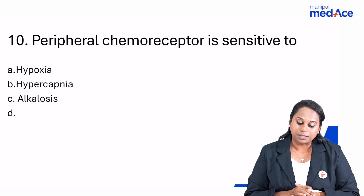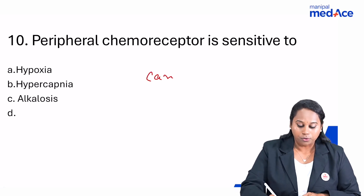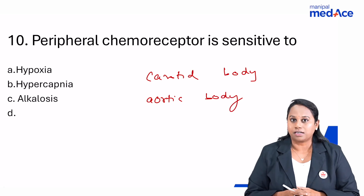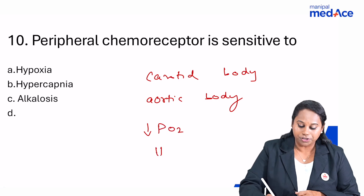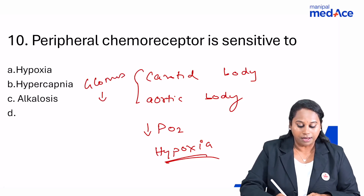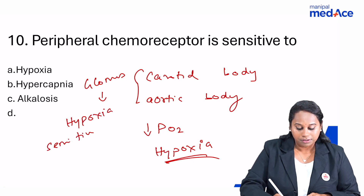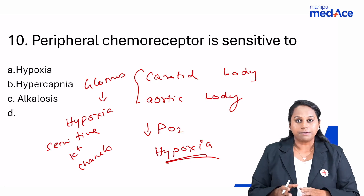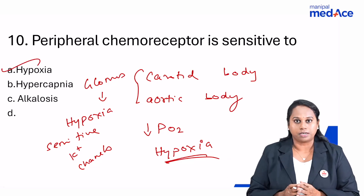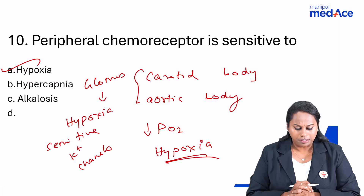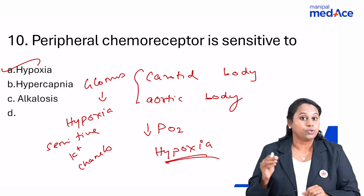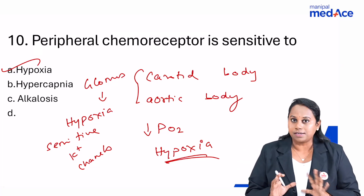Question 10: peripheral chemoreceptors are sensitive to what? The peripheral chemoreceptors — the carotid body and aortic body — are located on the carotid artery and arch of aorta. They are most sensitive to a fall in partial pressure of oxygen, i.e., hypoxia, because they contain glomus cells with hypoxia-sensitive potassium channels. Even though they can sense CO2 and H+, they are most sensitive to oxygen. So if hypoxia is an option, the answer is hypoxia.